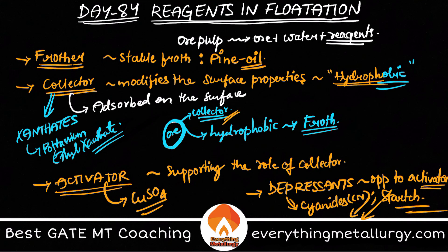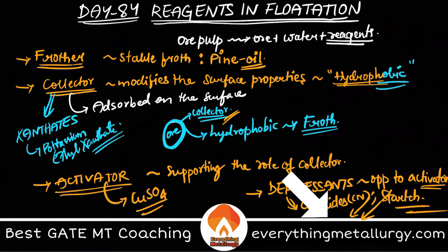So these are the four important reagents used in froth flotation: frother, used for stable froth; collector, to modify the surface property and make the surface hydrophobic; activator, to support the role of a collector by reacting with it and making an insoluble hydrophobic compound; and finally depressants, which are opposite to activators — they reduce hydrophobic character and stop collector action.